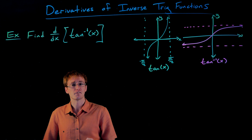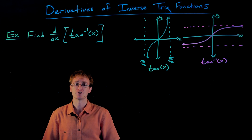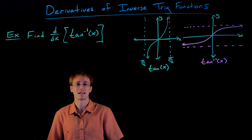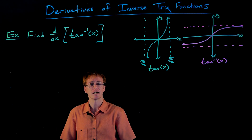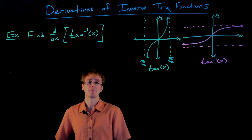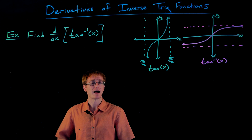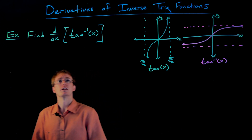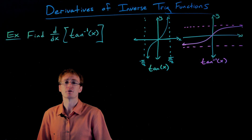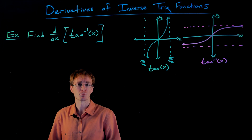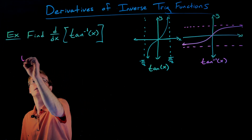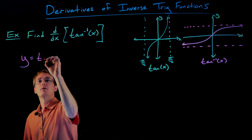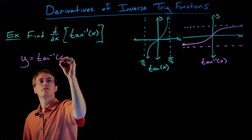So our derivative should represent that — it should always be positive. Let's go ahead and start finding the derivative of our inverse tangent function. We're going to use basically the same exact process as we used for our inverse sine function. We start by rewriting the equation without inverse tangent involved. We assume that the output of our inverse tangent function is some number — let's call it y. So let y be the angle that would come out of our inverse tangent function.